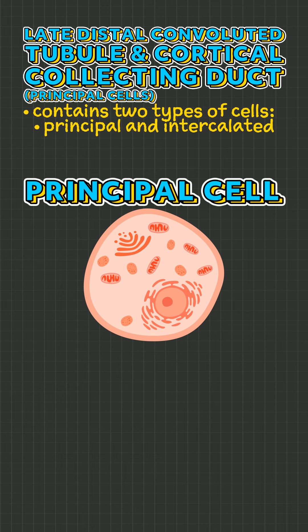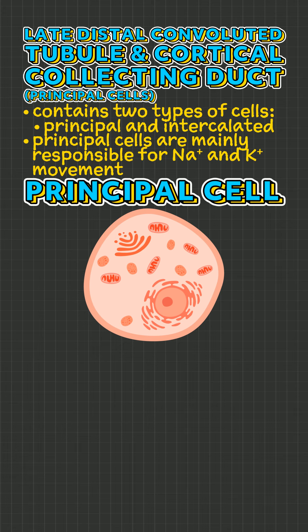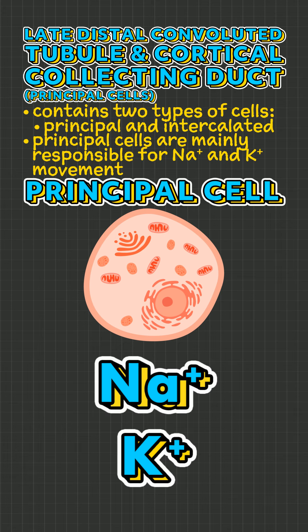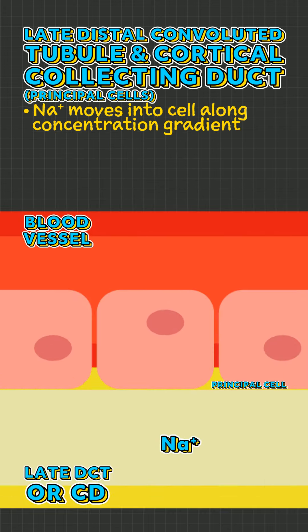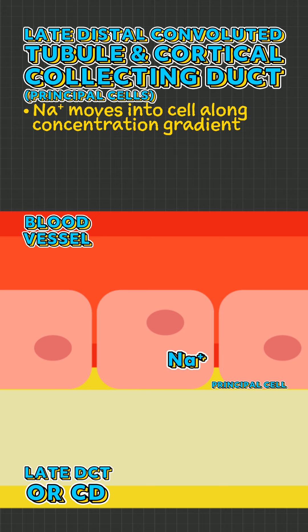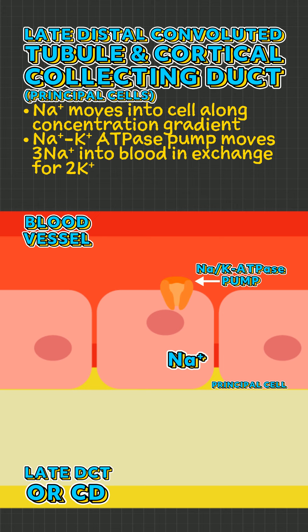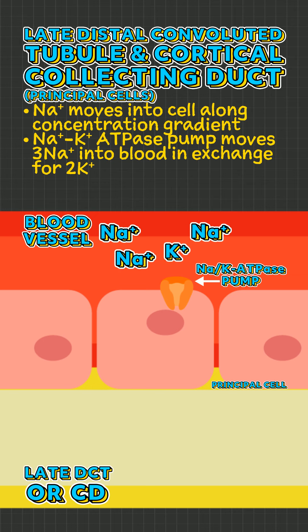In this video I will focus on the function of principal cells, which are mainly responsible for the movement of sodium and potassium ions. Sodium moves into the cell along its concentration gradient. A sodium-potassium ATPase pump then moves three sodium ions into the blood, in exchange for two potassium ions.